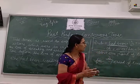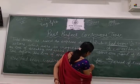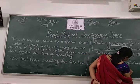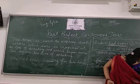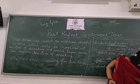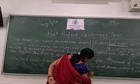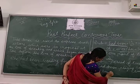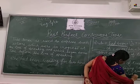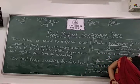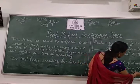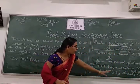Okay students, now it is clear. For example: 'I had been playing since morning.' Since morning is a point of time, so we use 'since.' And: 'I had been living for five years.' Five years is a period of time, so we use 'for.'